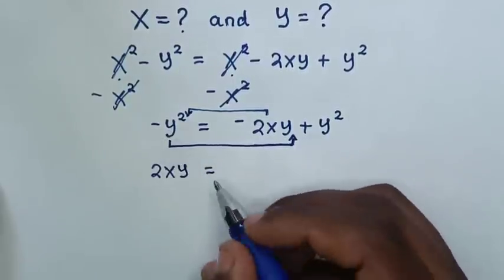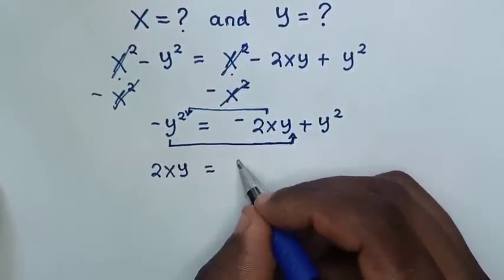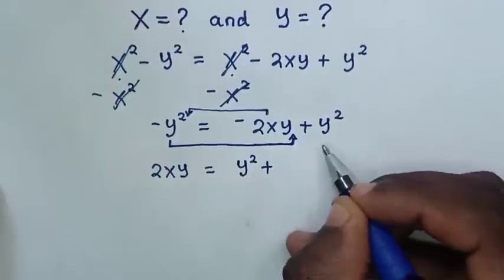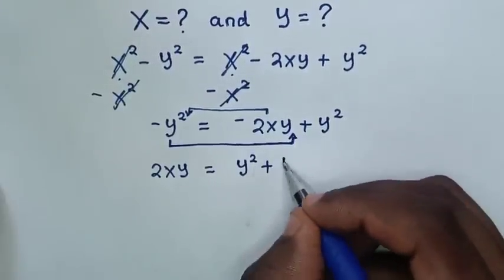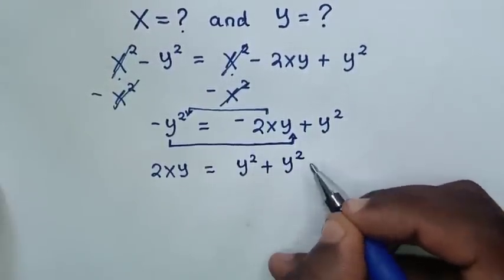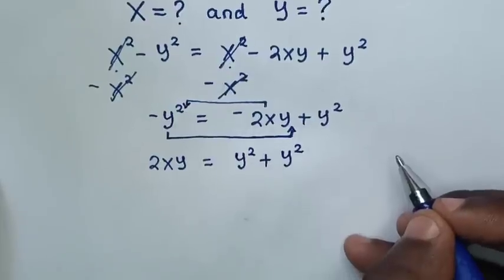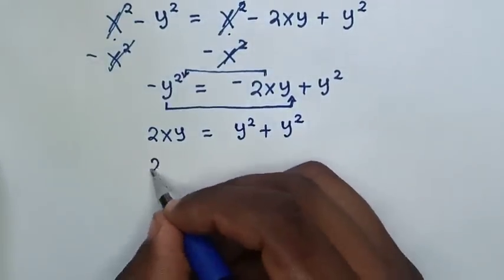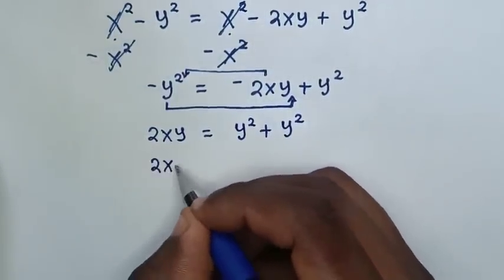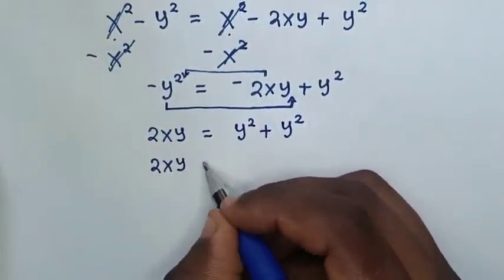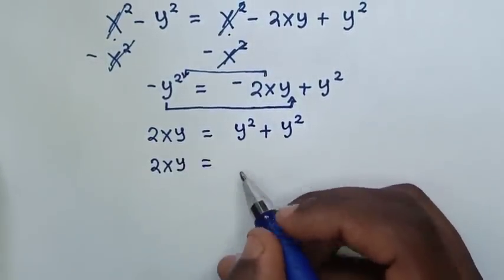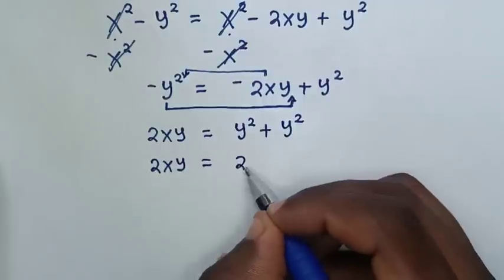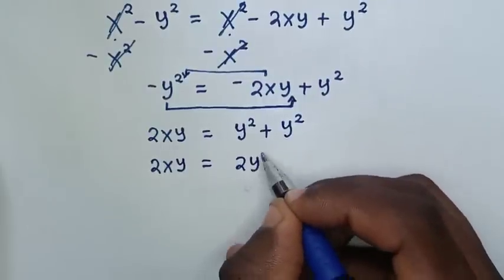...this will also be positive y squared, then plus this y squared. So our equation will be 2xy is equal to 2y squared.